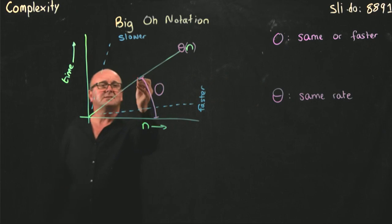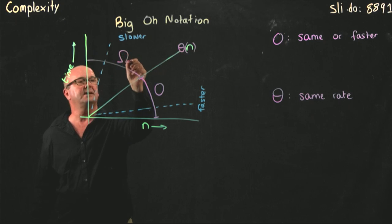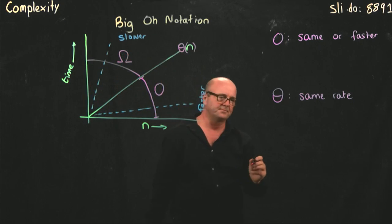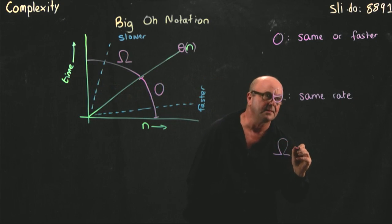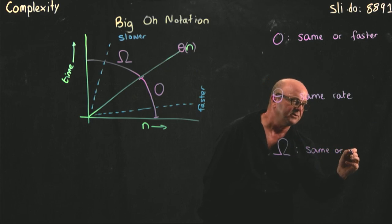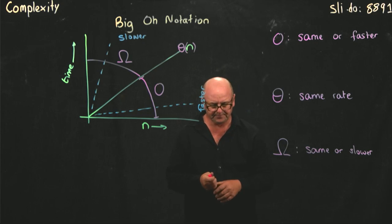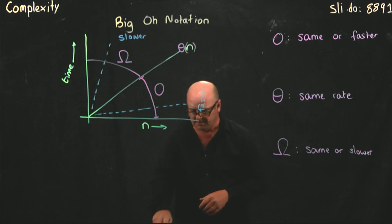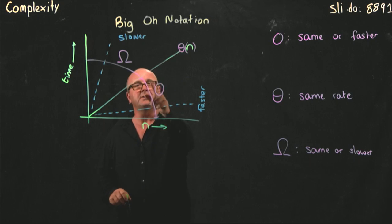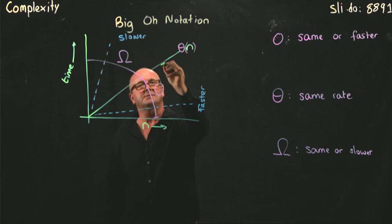And if something's slower, then we say it has big Omega complexity. So big Omega means it's the same or slower. There's two more, so big O can be up to and including the line. Big Omega can be above and including the line. And then there are two more terms.